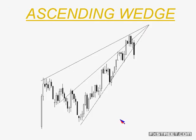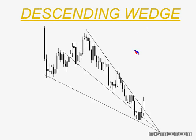Another common one is an ascending wedge. If you put some lines to this, we have a nice wedge. We've been going upwards, which appears to be a nice sustained upward move. But once we break that, this is a real strong sign that the move to the upside is over and we're probably going to have a very sharp move to the downside. You can reverse the concept just as easily.